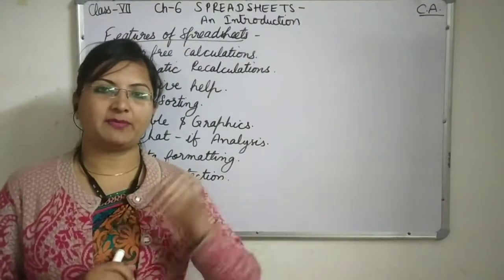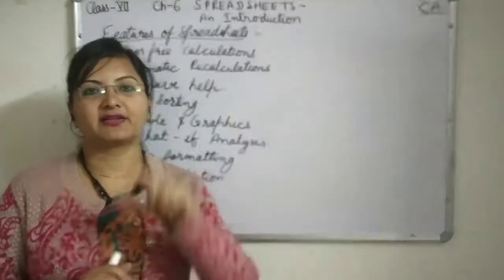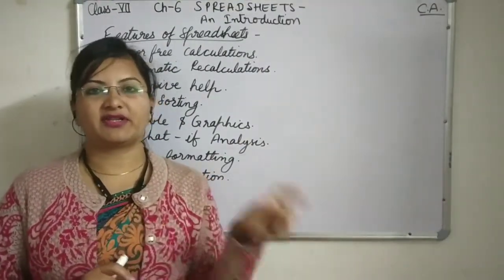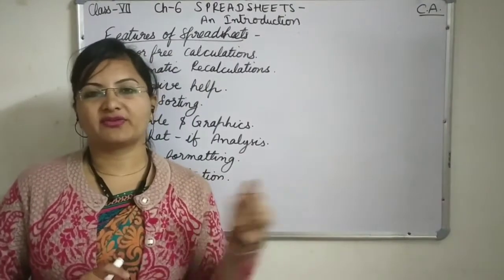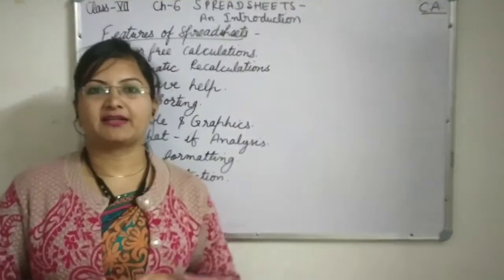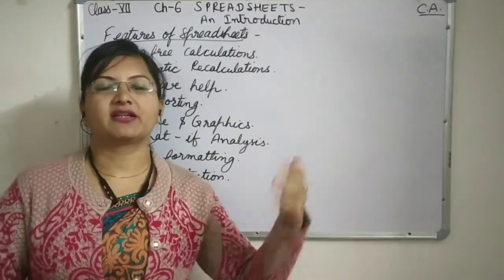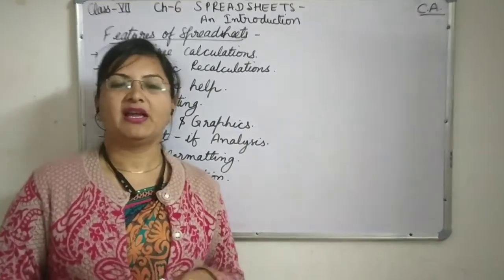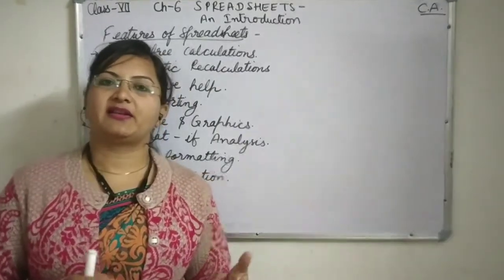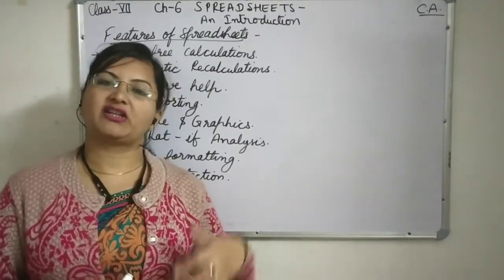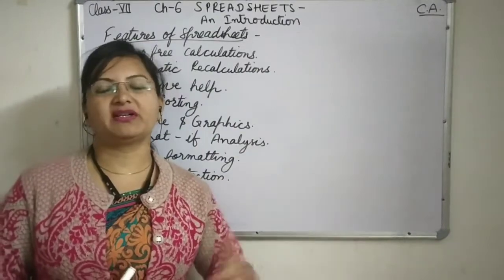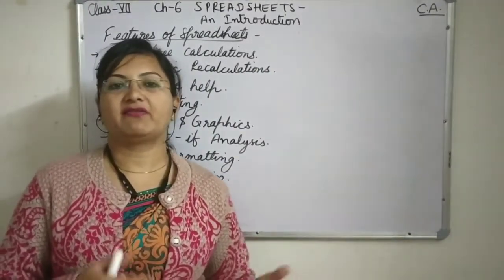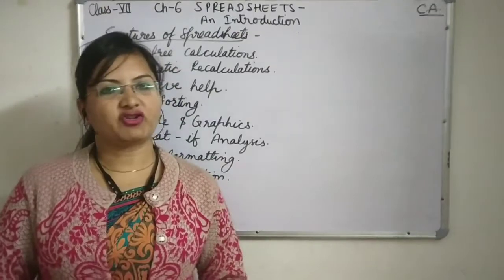We can put a background color in the heading, a background color for data in rows, and different background colors in columns. We can put a border on the table. There are inbuilt designs available — we can choose inbuilt designs directly or we can format the data according to our own choice.